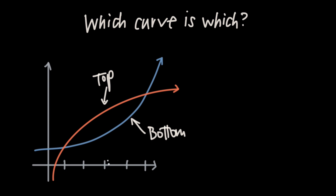The way we know that for sure is we start here at y equals 0 and move up — we hit the bottom curve, which is the blue curve, first, and then if we keep going we hit the red curve on top. Now you might ask about the area outside the intersection region: if we started out there and moved up, we'd hit the red curve first. But remember, we only care about the area between the intersection points.